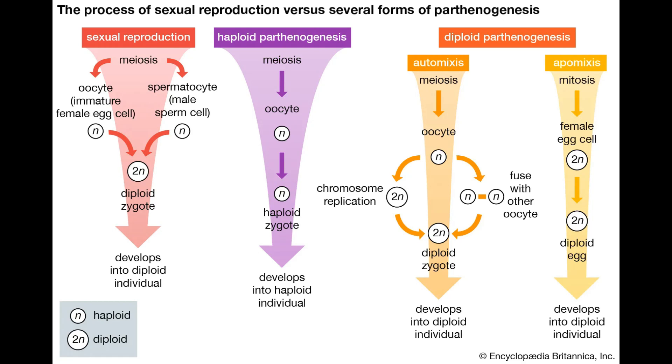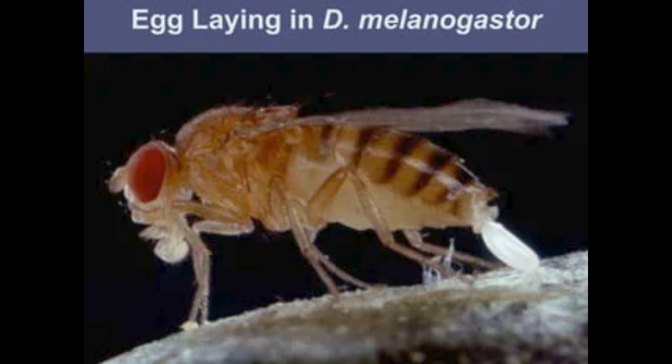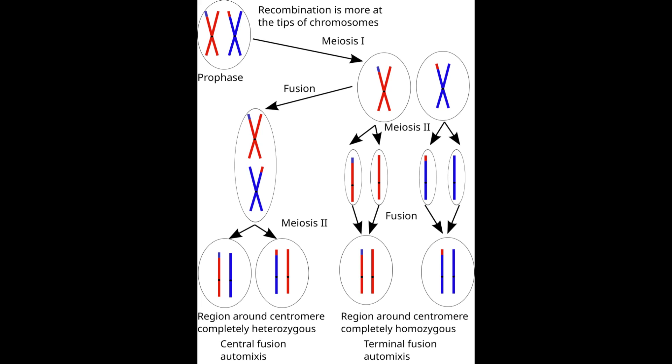Animals by and large reproduce sexually, but here and there some individual species, or perhaps individual genera, have made the switch to asexuality. For example, females of numerous species of Drosophila will naturally drop an egg that occasionally develops parthenogenetically, and scientists have selected some Drosophila strains, including melanogaster, to be fully asexual. The restoration of diploidy, or having two full sets of chromosomes, occurs by a process called automixis.